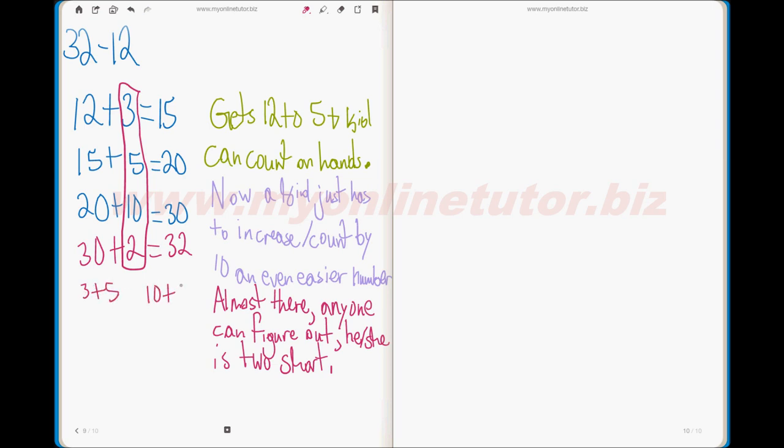In other words, the original number of 12 is still there. The 3, 5, 10, and 2 were added later on. So if you add 3 and 5 you get 8,